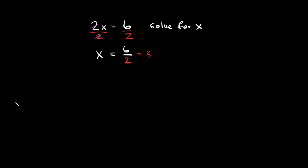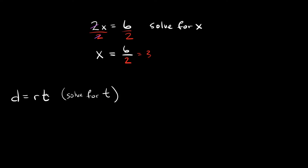Now let's say you were given a formula where you were just given variables. For an example, let's try the distance, time, and rate formula, which is: distance is equal to the rate times the time. In this example, let's say you were asked to solve for t. We're going to solve for t right here. If we want to solve for t, that means we want to isolate t by itself on one side of the equal sign.